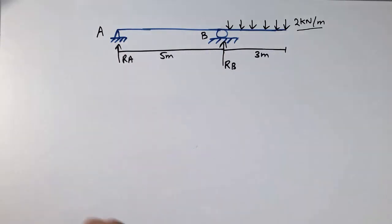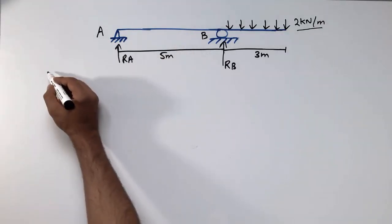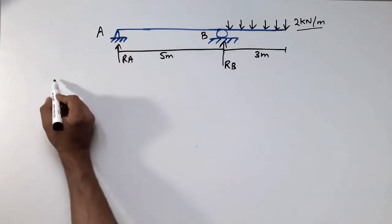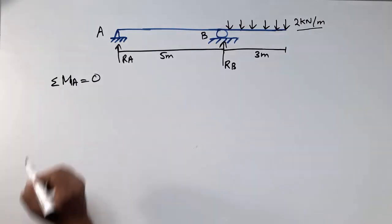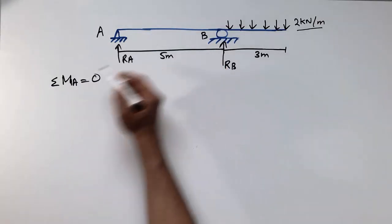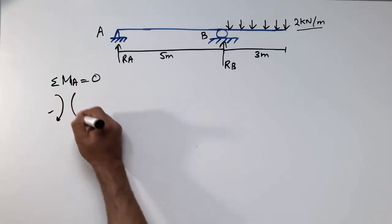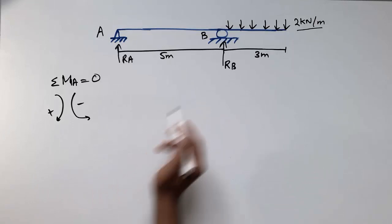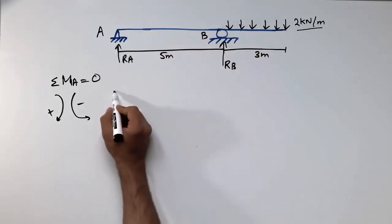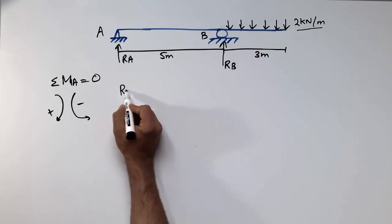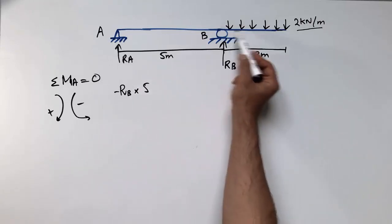To find the support reactions, let us take the summation of moments at point A equal to zero. I assume clockwise moments are positive and counter-clockwise moments are negative. The reaction RB acts in a counter-clockwise direction about A, so it will be negative.